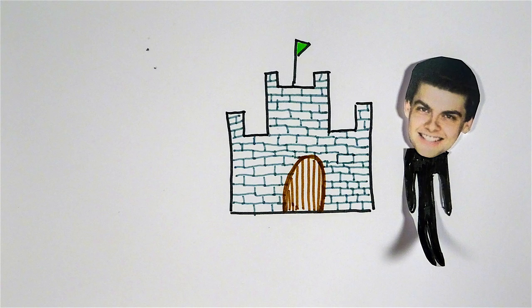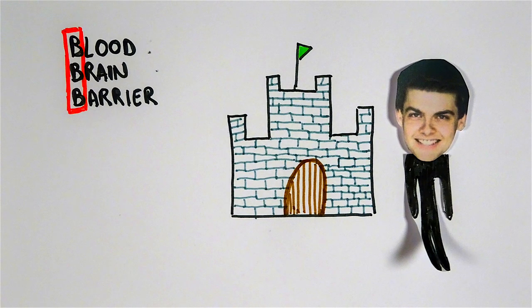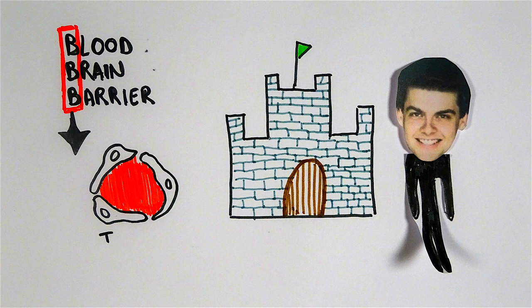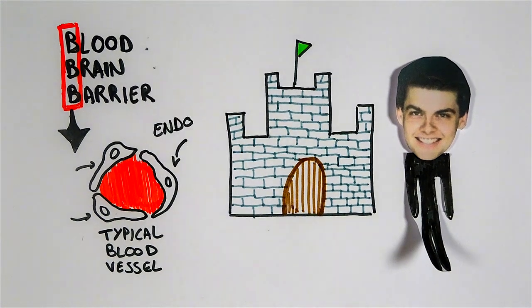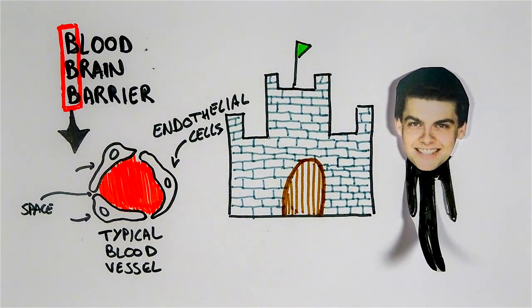Because there's only one castle gate called the blood-brain barrier or BBB. Now, a normal blood vessel is built up of endothelial cells and has still spaces in between these cells for substances to pass through and get outside.